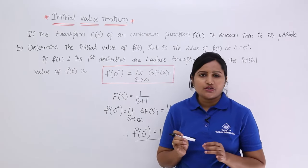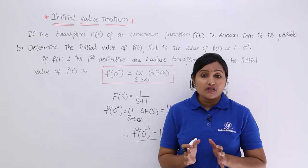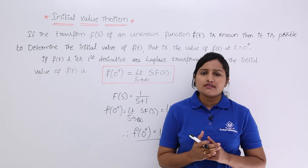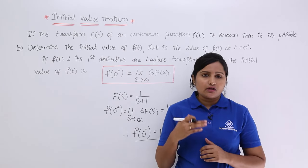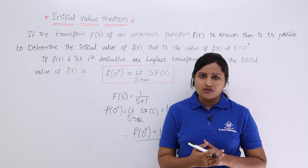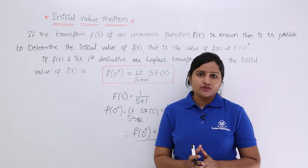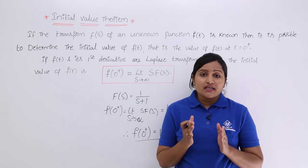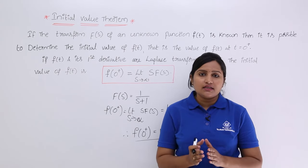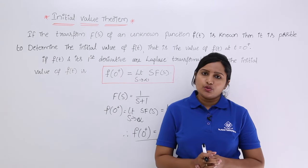These two formulas you need to keep in mind. They are not only useful in signals and systems, but also in control systems. By using the initial value theorem, we can trace the initial value of an unknown signal when its spectrum is known.